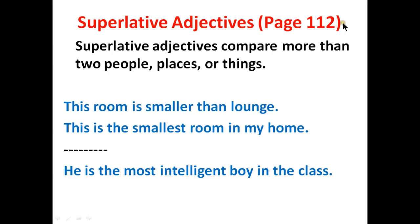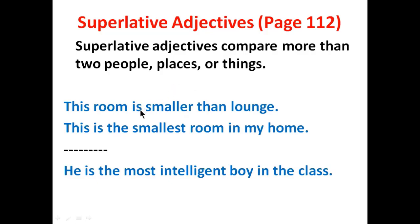On page number 112 you have the topic about superlative adjectives. Superlative adjectives help students compare more than two people, places, or things. For example, this room is smaller than the lounge. The word 'smaller' is a comparative adjective, not a superlative adjective. The root adjective is 'small.' For one thing I will say this is a small room. But if I'm going to compare the length and width of the room with any other part of the house, I will use a comparative adjective.